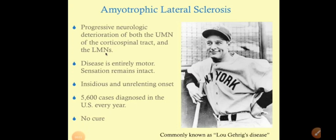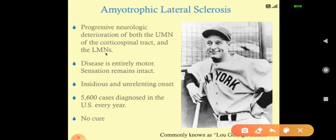Good evening doctors, welcome. Today we are going to discuss amyotrophic lateral sclerosis. ALS is a progressive neurological deterioration of both upper motor neuron and lower motor neuron of the lateral corticospinal tract. It is called amyotrophic lateral sclerosis because of the involvement of the lateral corticospinal tract.